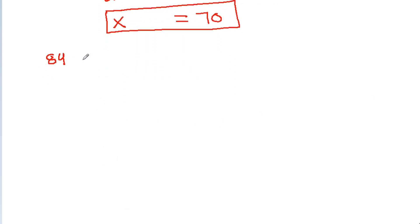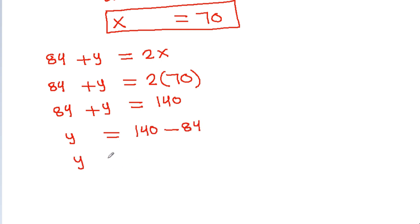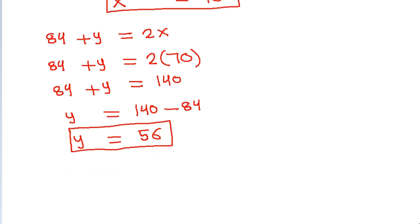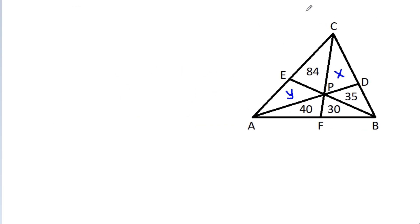Since 84 plus Y equals 2X, and X is 70, we get 84 plus Y equals 140. Therefore Y equals 140 minus 84, which gives Y equals 56.